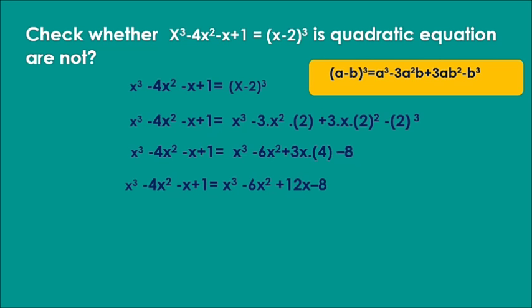After calculation: x³ minus 4x² minus x plus 1 equals x³ minus 6x² plus 12x minus 8. Transposing: x³ minus 4x² minus x plus 1 minus x³ plus 6x² minus 12x plus 8 equals 0. After the calculation, we get 2x² minus 13x plus 9 equals 0.